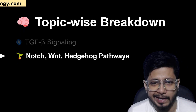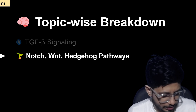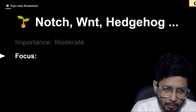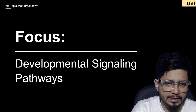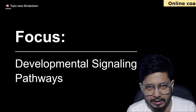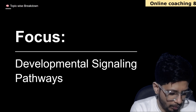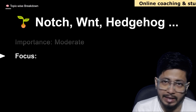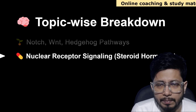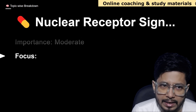Notch, WNT, and Hedgehog pathways together are among the most frequently asked topics. All three are related to development, with moderate importance. The focus is on developmental signaling pathways, as Notch, Hedgehog, and WNT are all linked to the developmental pathways of organisms.